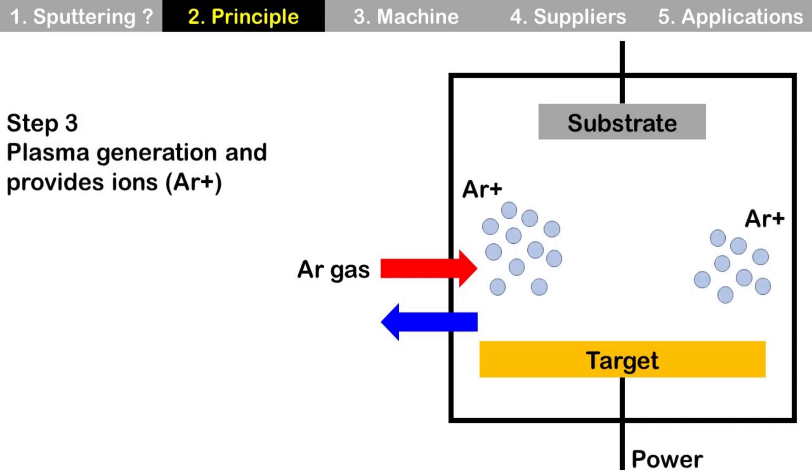Step 3: Plasma generation and provides ions. Using power through the target parts, plasma is generated by breaking neutral argon gases into argon ions and electrons. But I don't put electrons in this picture to simplify.